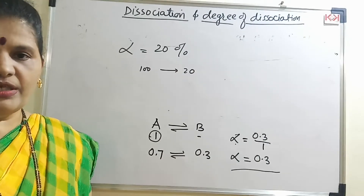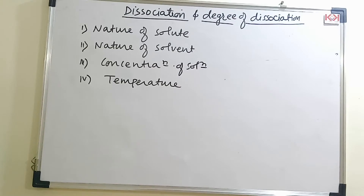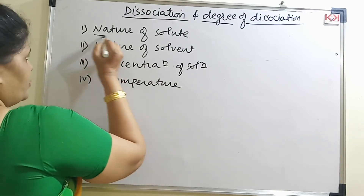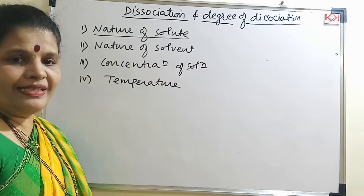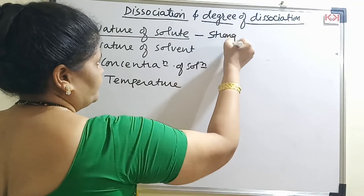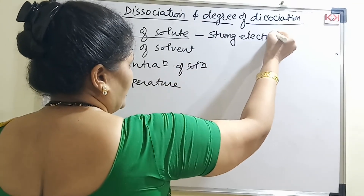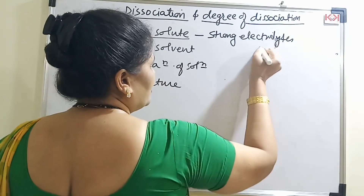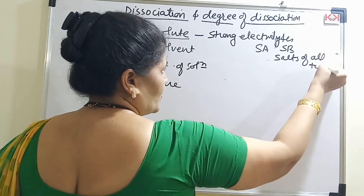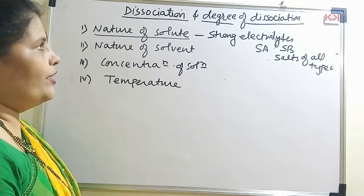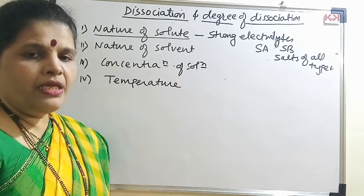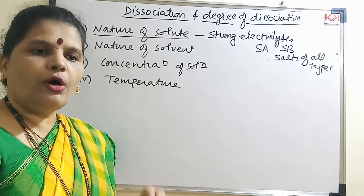Now let us see the factors on which degree of dissociation depends. The first is the nature of the solute — if I want more of the substance to dissociate, I should select strong electrolytes: strong acids, strong bases, and salts of all types. The second factor is the nature of the solvent — the solvent should have high polarity for more dissociation.